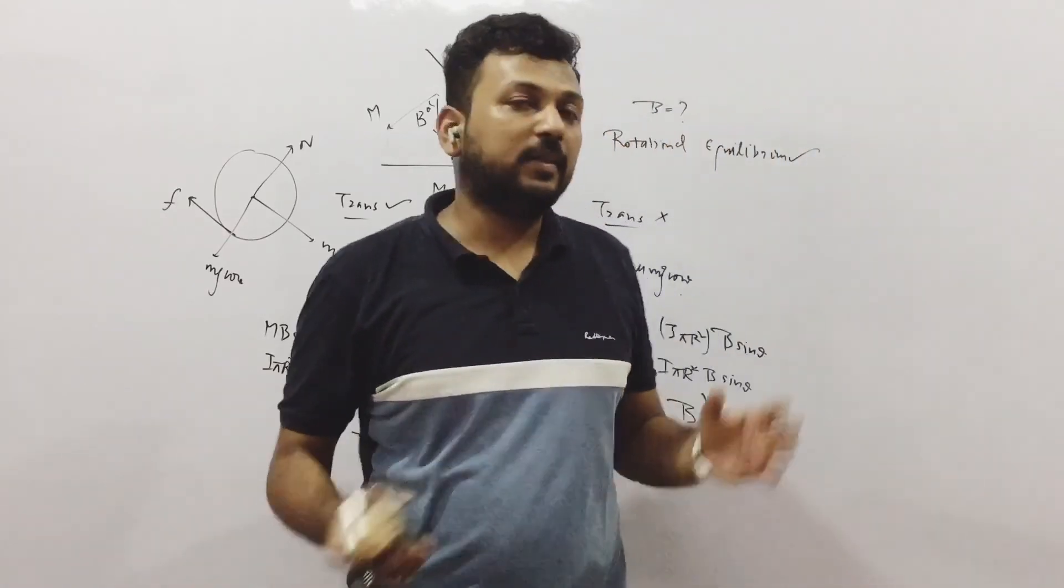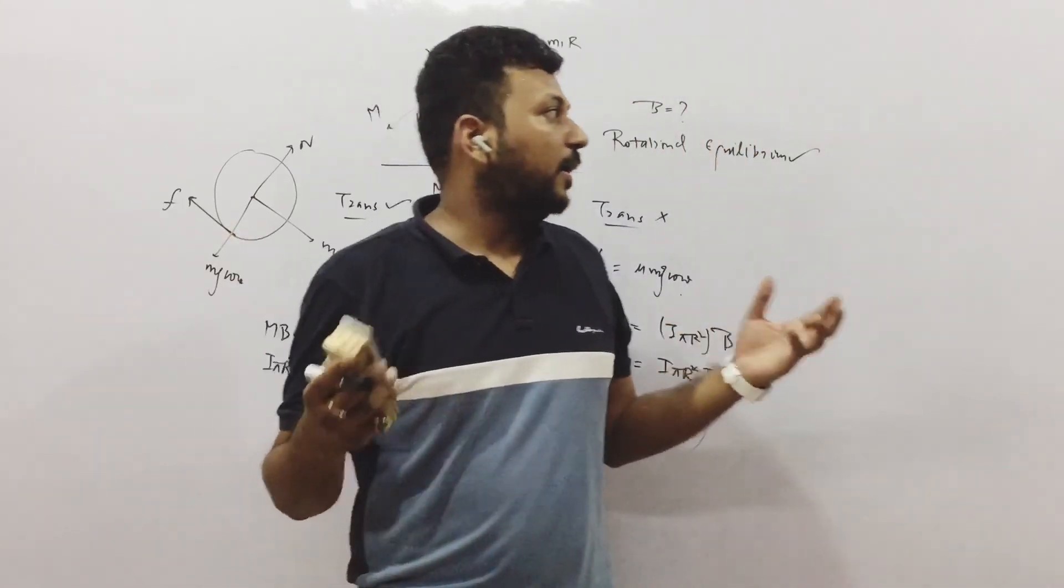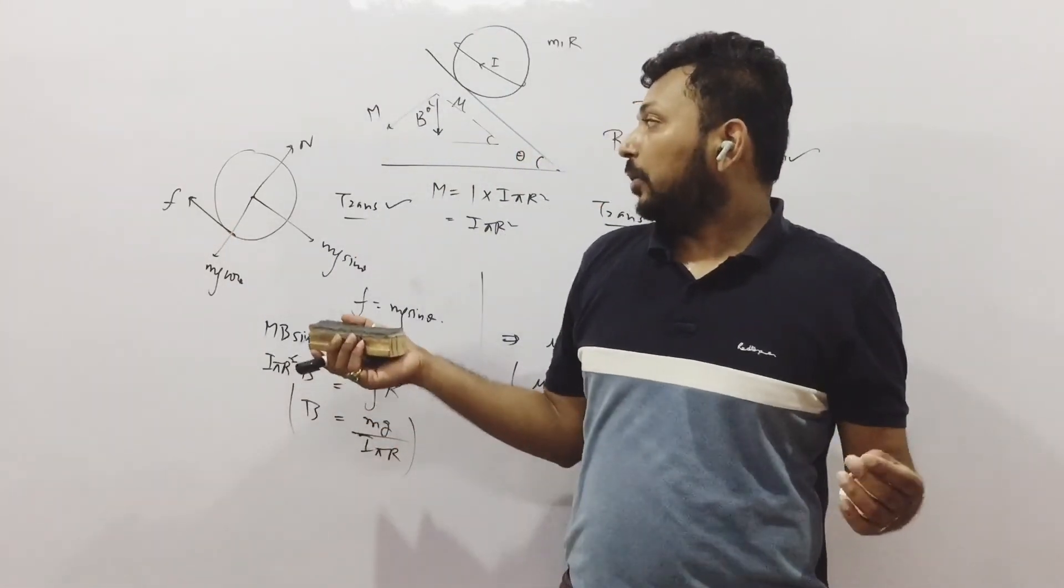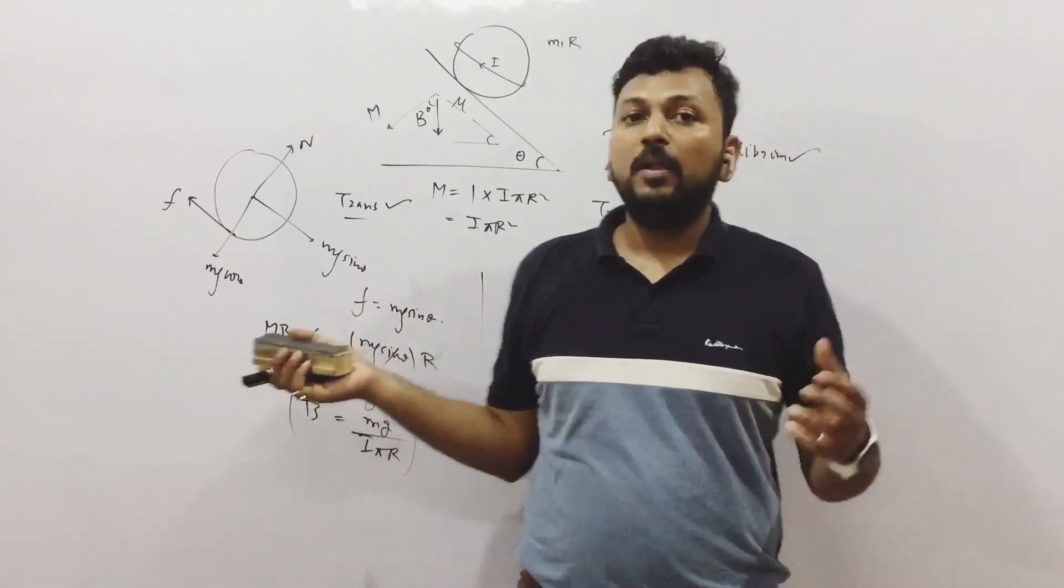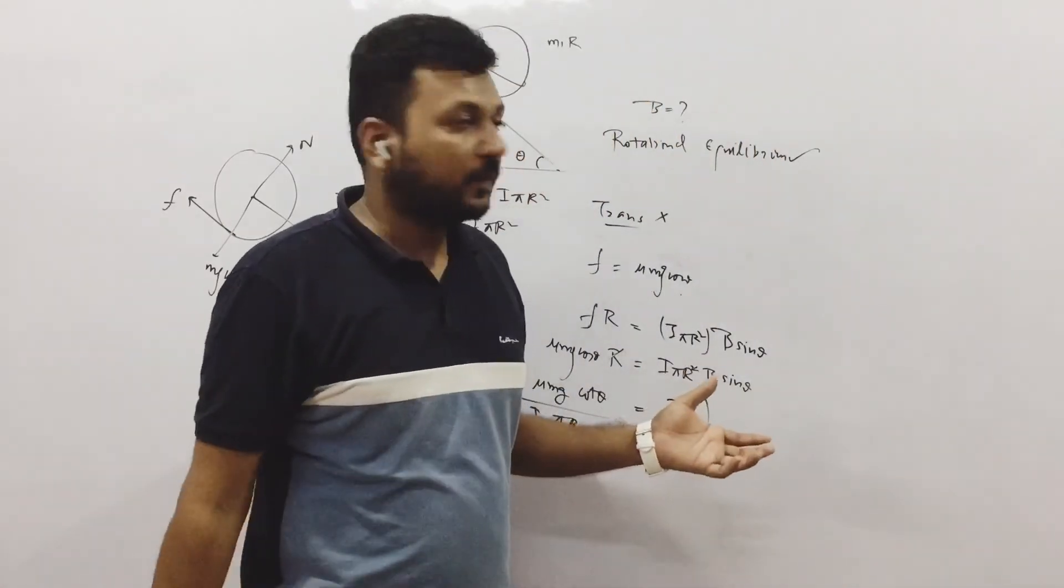I hope the question is clear. So two cases, translational equilibrium is there, it is not there. And I hope I have made it clear. So if it is in translational equilibrium, it is not moving, then friction is not maximum. If it is moving, then friction is maximum.